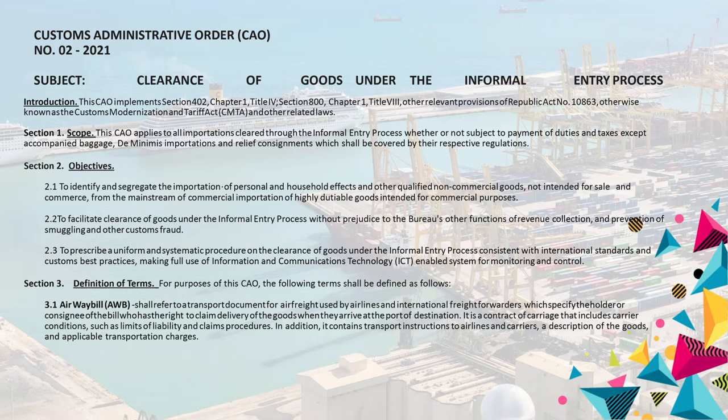It is a contract of carriage that includes carrier conditions such as limits of liability and claims procedures. In addition, it contains transport instructions to airlines and carriers, a description of the goods, and applicable transportation charges.